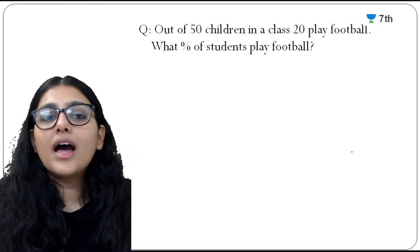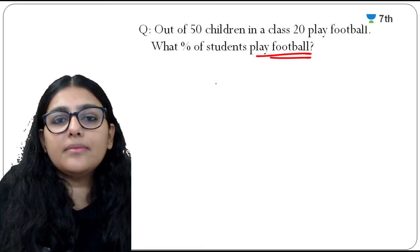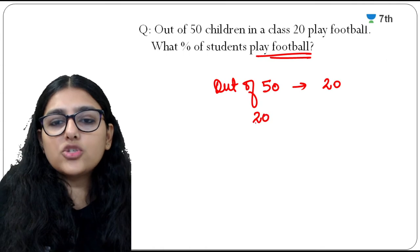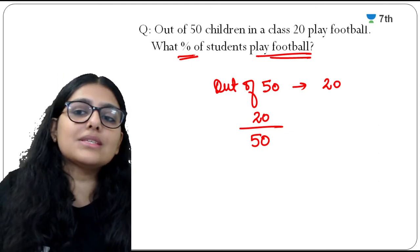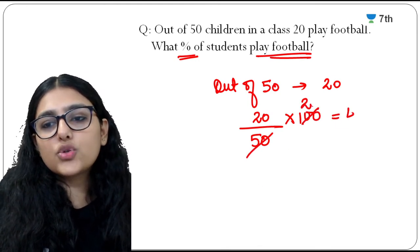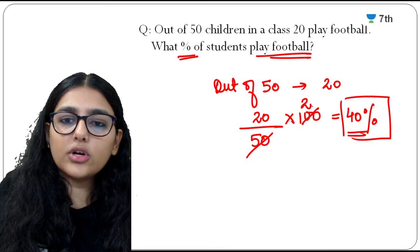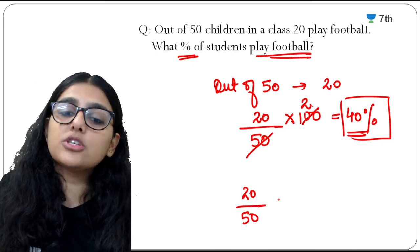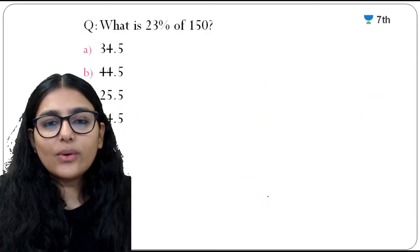Out of 50 children in a class, 20 play football. What percentage of students play football? It is (20/50) × 100 = 40%. So 40% of the students play football.